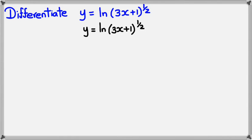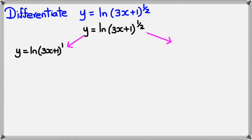In this example I want to differentiate y = ln(3x+1)^(1/2). I'm going to show you two ways of doing this. The first is the short method. If you remember your log rules, the power can be brought in front of the ln, so this becomes (1/2)·ln(3x+1).